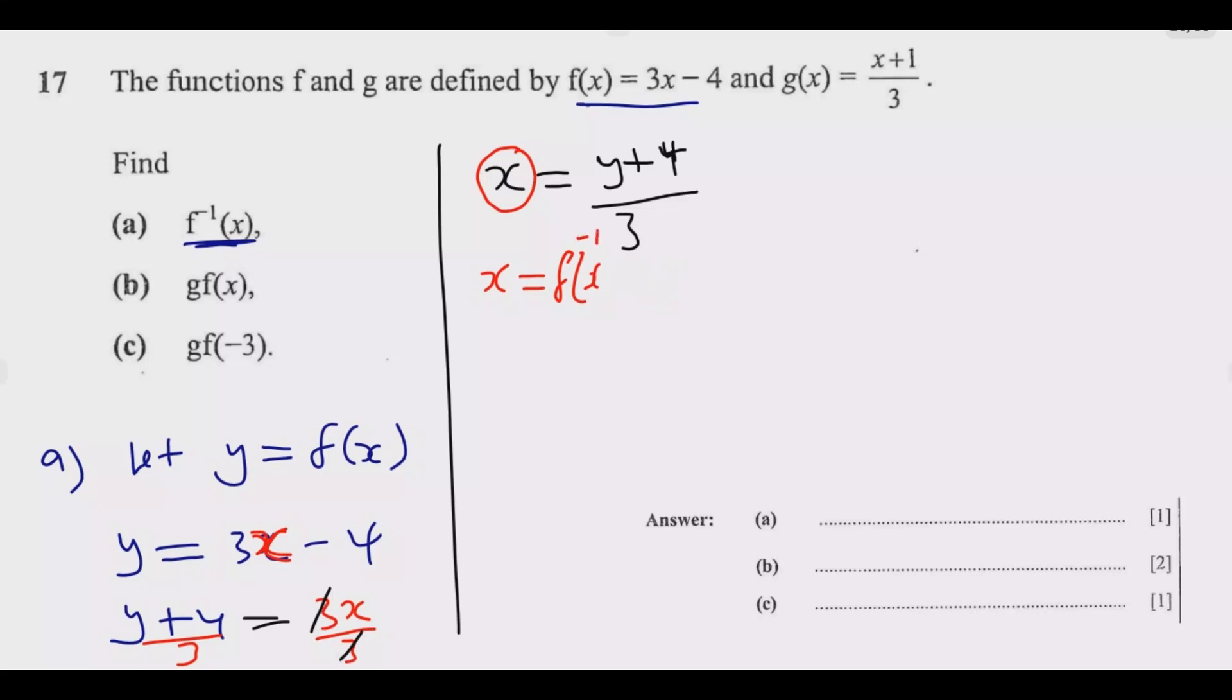You do that, then whatever there is y you substitute x. So the function becomes f inverse equals x, whatever there is y you put x plus 4 over 3. So this is the inverse of this original function. This is how you answer question (a).